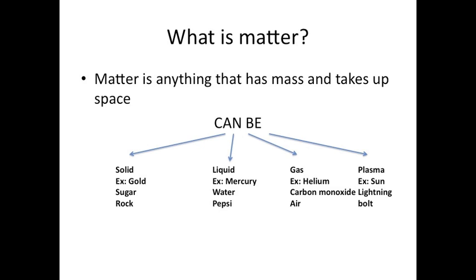When you think about it, matter is pretty much all around us. I've listed some examples for you. For solids, you can think about gold, sugar, or rocks. Liquid examples of matter are mercury, water, or Pepsi. For gas, helium, carbon monoxide, or air. And plasma is pretty special—you've got the sun or lightning bolts.